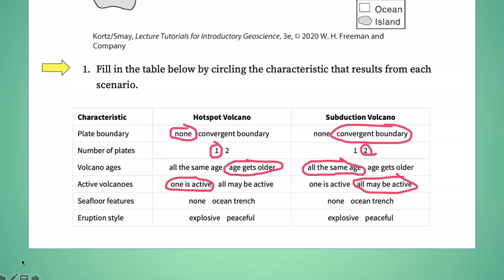There wouldn't be a seafloor feature associated with a hot spot volcano, but a subduction zone always has a trench. In terms of the eruption style, hot spots tend to be mafic basalt and produce relatively gentle eruptions. Subduction related volcanoes tend to be andesite stratovolcanoes, and those are quite explosive.